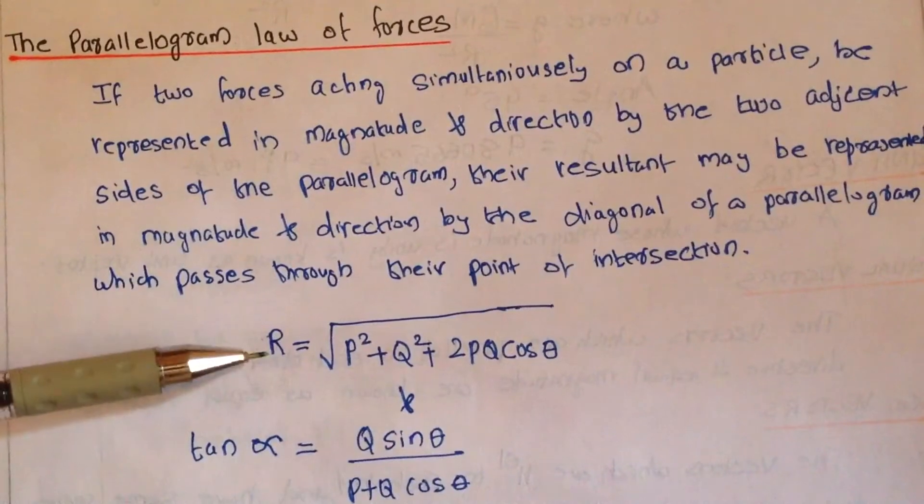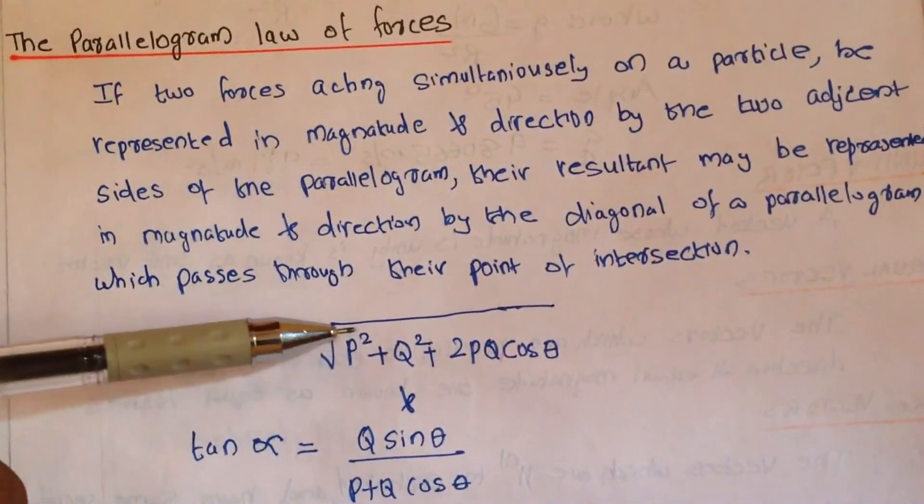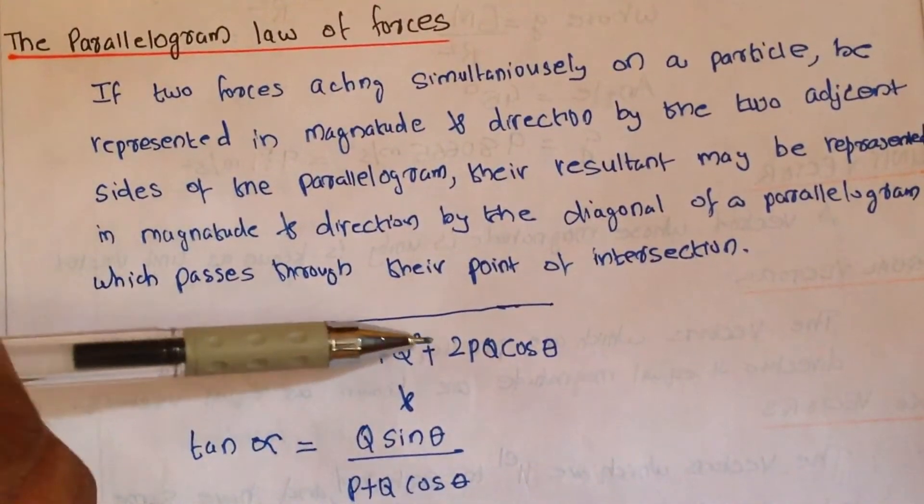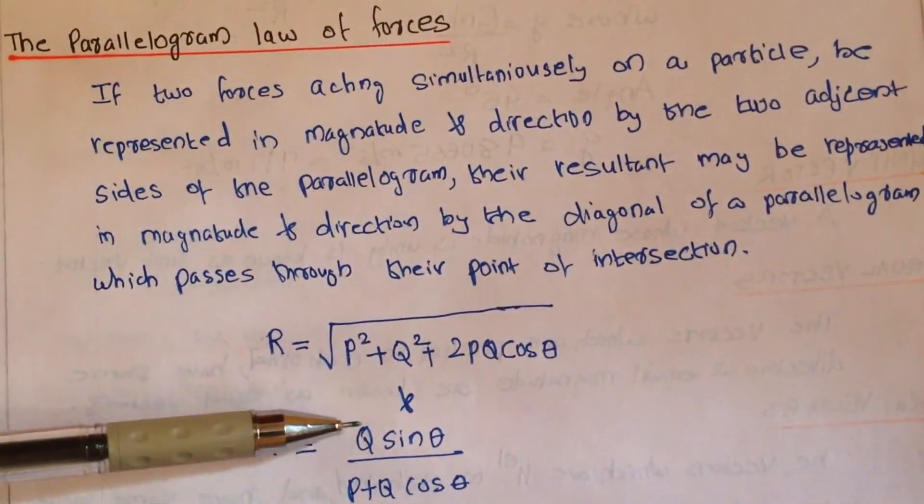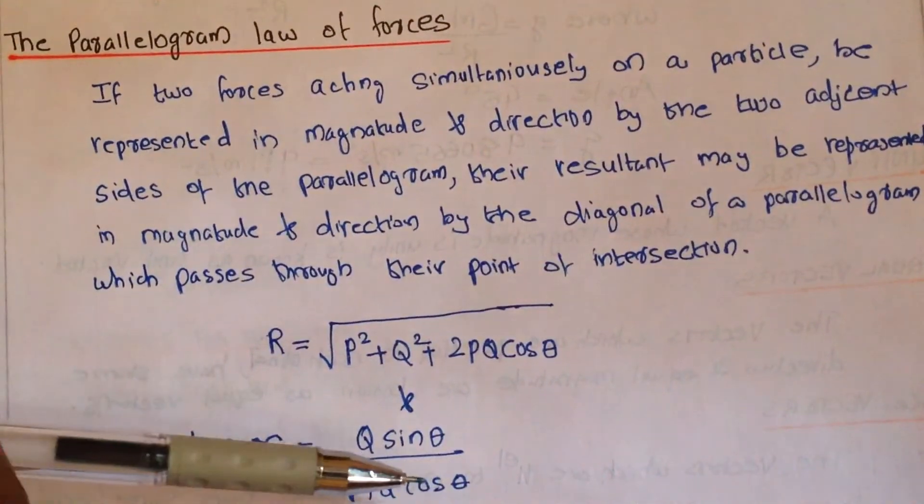So the equation for that resultant is R equals root of P square plus Q square plus 2PQ cos theta, and tan alpha equals Q sine theta by P plus Q cos theta.